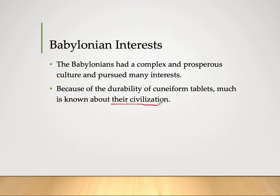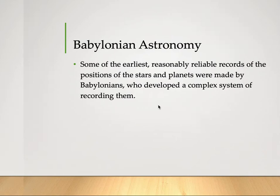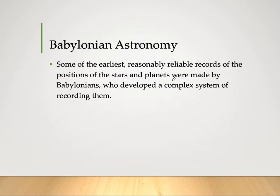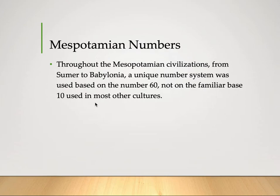Because of this written form on cuneiform tablets, some of the earliest and reasonably reliable records of the positions of stars and planets were made by the Babylonians through their astronomy. They developed a complex system for recording celestial observations, making use of the writing system that had been used throughout Mesopotamian civilization.